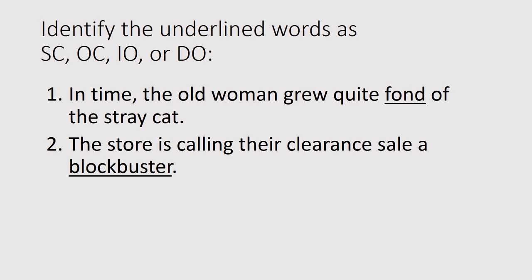Number two: 'The store is calling their clearance sale a blockbuster.' 'Is calling' is the predicate. Is it transitive or intransitive? Is calling what? 'Their clearance sale' — that's your DO. What follows after? 'A blockbuster' — describing your DO. Therefore 'a blockbuster' is an object complement.